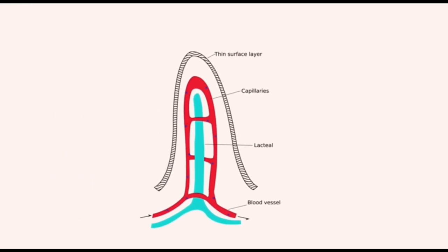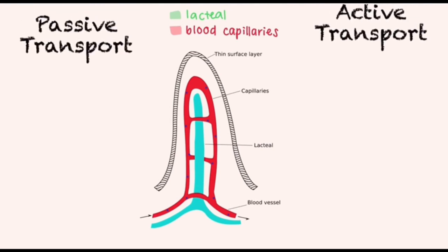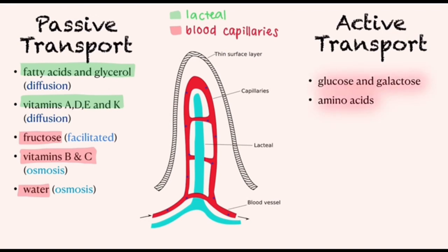In the villus, substances are transported into the lacteal and blood capillaries through passive and active transport. Fatty acids, glycerol, and lipid-soluble vitamins such as A, D, E, and K are transported by simple diffusion. Fructose is transported by facilitated diffusion, and vitamins B and C and water are transported through osmosis. Through active transport, glucose, galactose, and amino acids are transported.